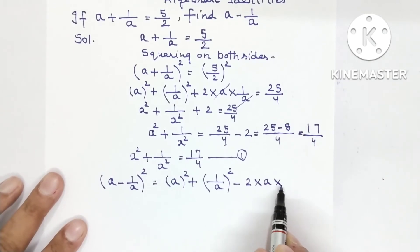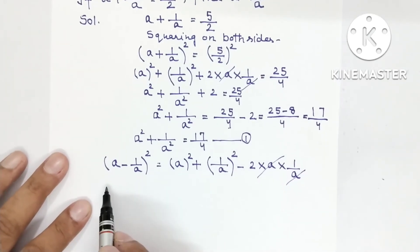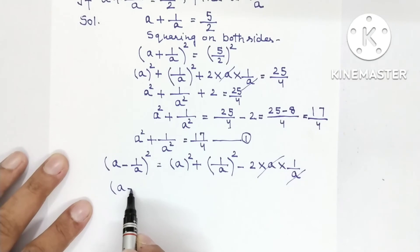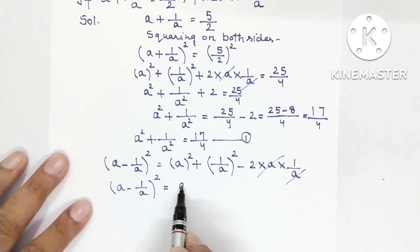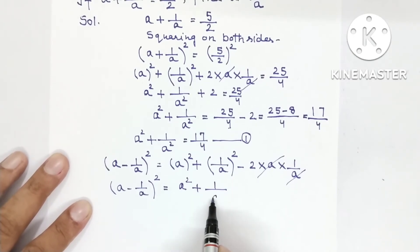So minus 2 × a × 1/a. A and a cancel. So here (a - 1/a)² will be equal to a² + 1/a².